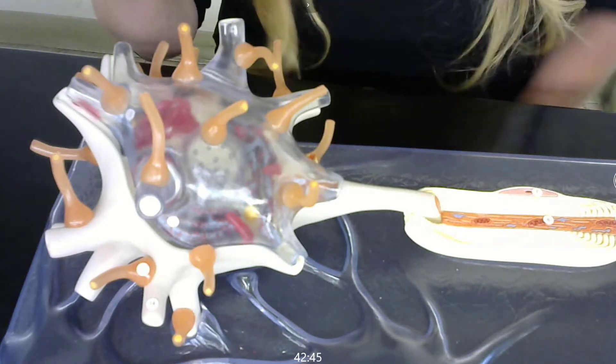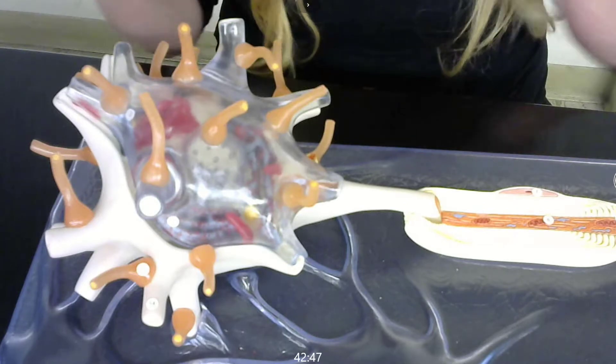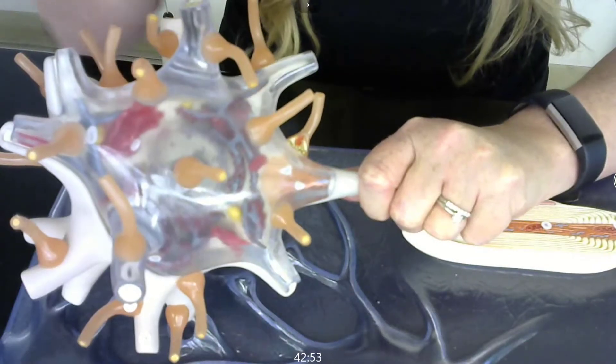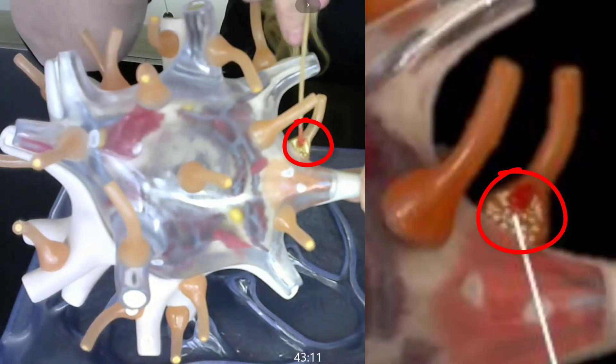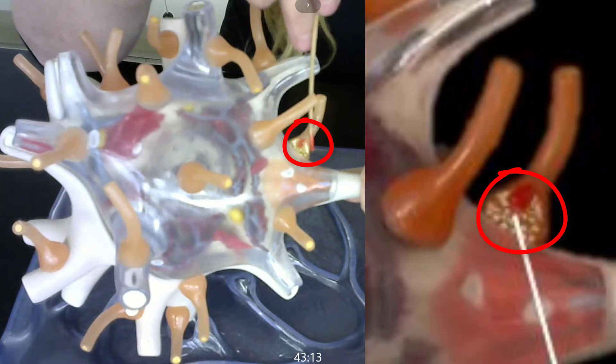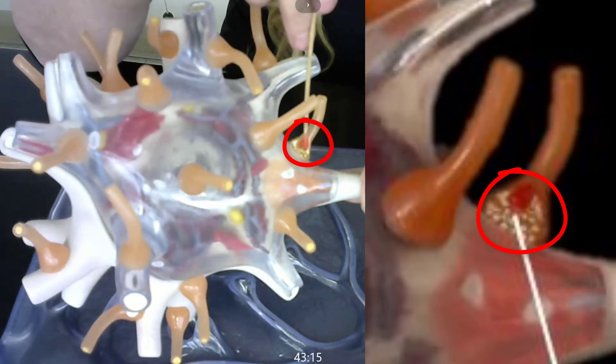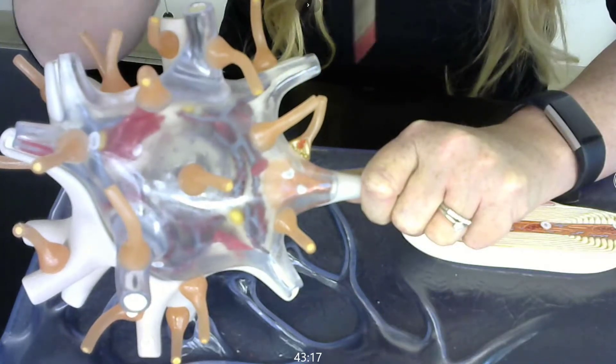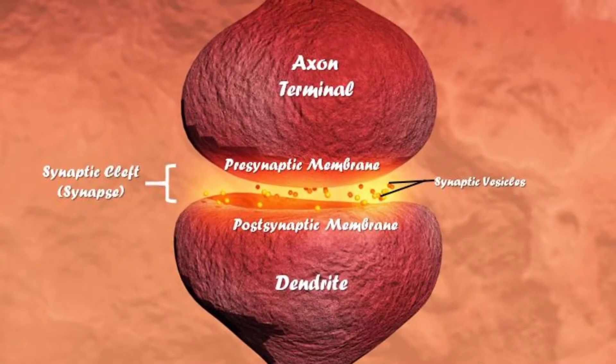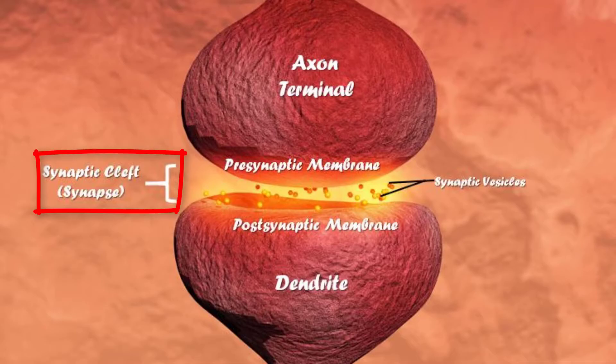These axon terminals are full of neurotransmitter. One of these has been cut open. So this is the axon terminal. The axon terminal has synaptic vesicles filled with neurotransmitter. There's also a tiny space that exists between the axons and the dendrites, and that would be the synaptic cleft.